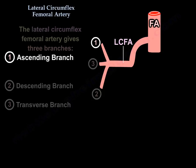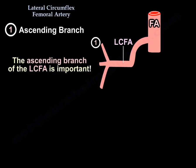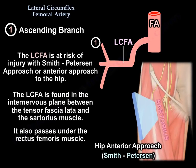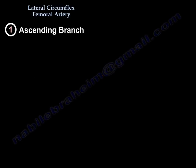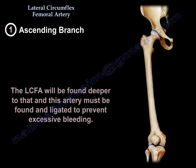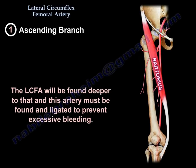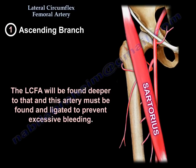The ascending branch of the lateral femoral circumflex artery is clinically important. It is at risk of injury with the Smith-Petersen approach, or anterior approach to the hip. It is found in the internervous plane between the tensor fascia latae and the sartorius, and the artery, found deeper to that, must be identified and ligated to prevent excessive bleeding.